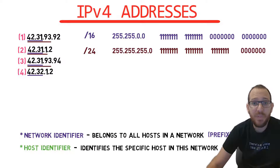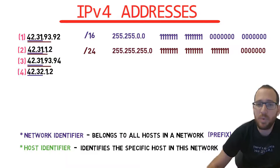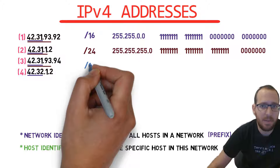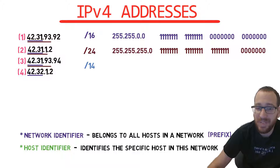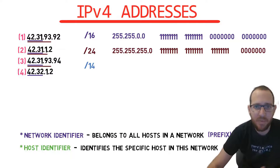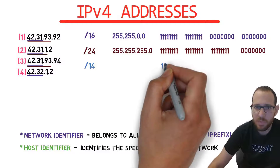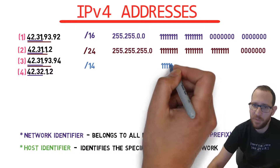Network prefixes do not have to align to 8 bits or full bytes. Let's say we have a network prefix of 14 bits. How do we convert that into a subnet mask? The first byte is clear — we have 8 bits on, so the first byte is 255.